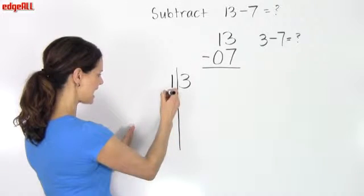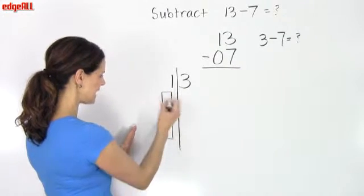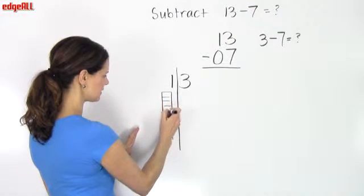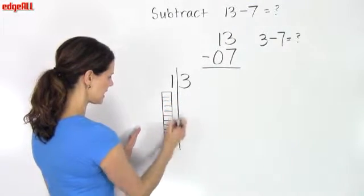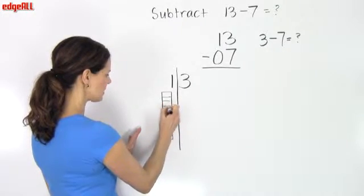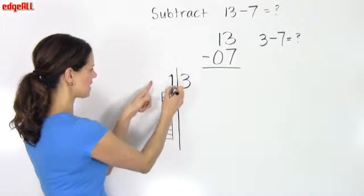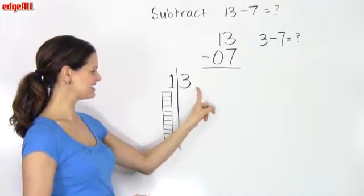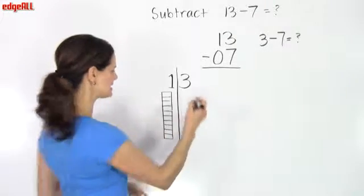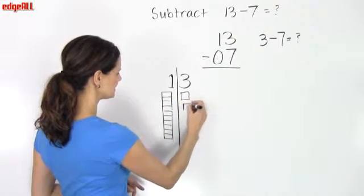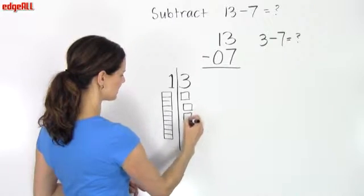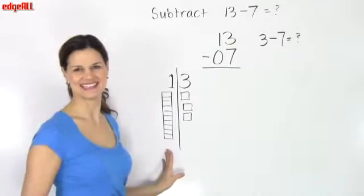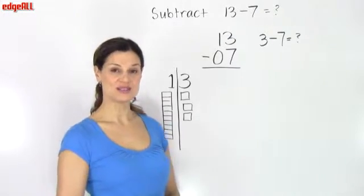So in my tens column, I have 1 ten. So let's make a little 10 bar here: 1, 2, 3, 4, 5, 6, 7, 8, 9, and 10. So here I've got in my tens column, 1 ten. And in my ones column, or in my ones place, I have 3 ones. So I'll draw these separated because they're just ones. This one's all together because it's representing a 10. And so what I'm going to do is I'm going to borrow this 1 ten from my tens column, and I'm going to move it over into my ones column.